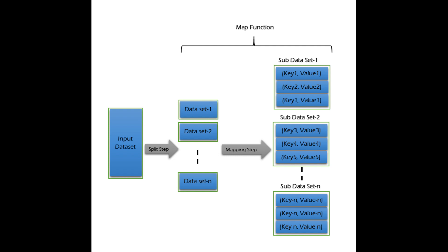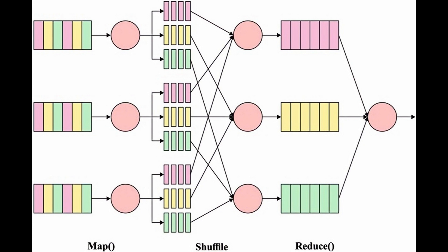Reduce Phase: The sorted and grouped intermediate key-value pairs are now processed by the Reduce function. The Reduce function takes a key and its associated values and performs a user-defined operation on them. The result of the Reduce function is a set of output key-value pairs, which are then collected and merged to produce the final output of the MapReduce job.